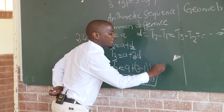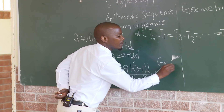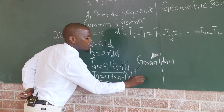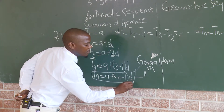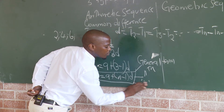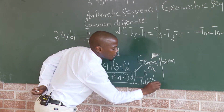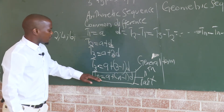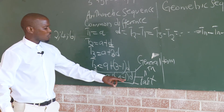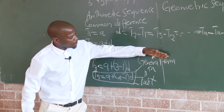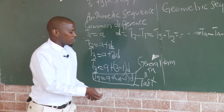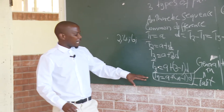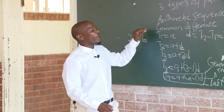We have the general term. We have the general term, and we have the nth term and the last term. The general term is: Tn equals A plus (N minus 1) times d. This is the general term, this is the nth term, and this is the last term.